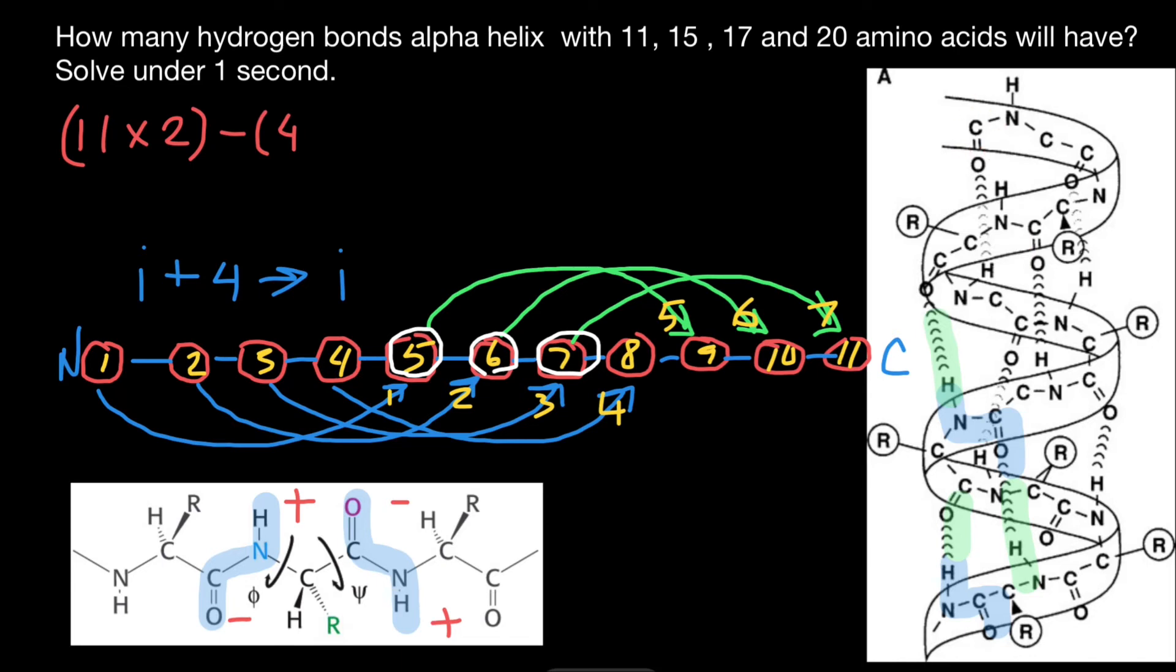So plus four, four plus four. And what are we going to get? 11 residues times two is going to be 22, minus eight is going to be 14.